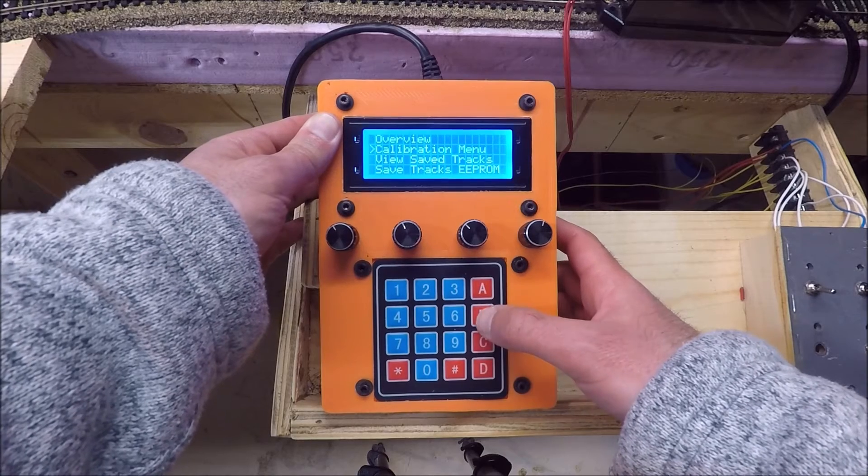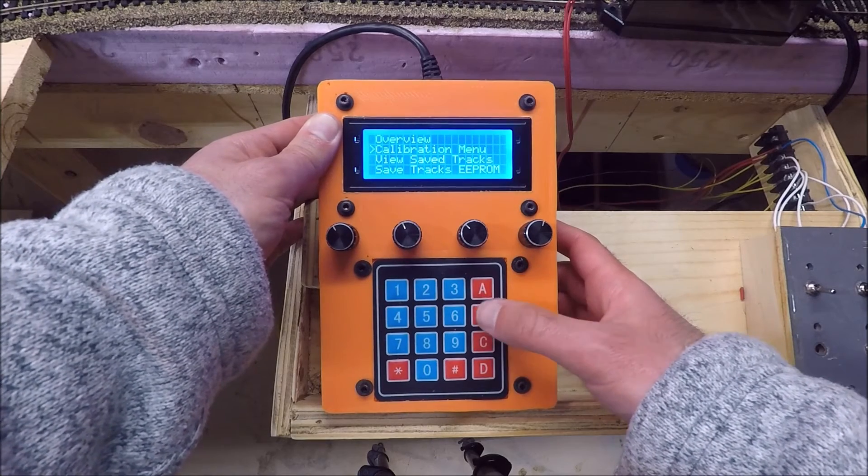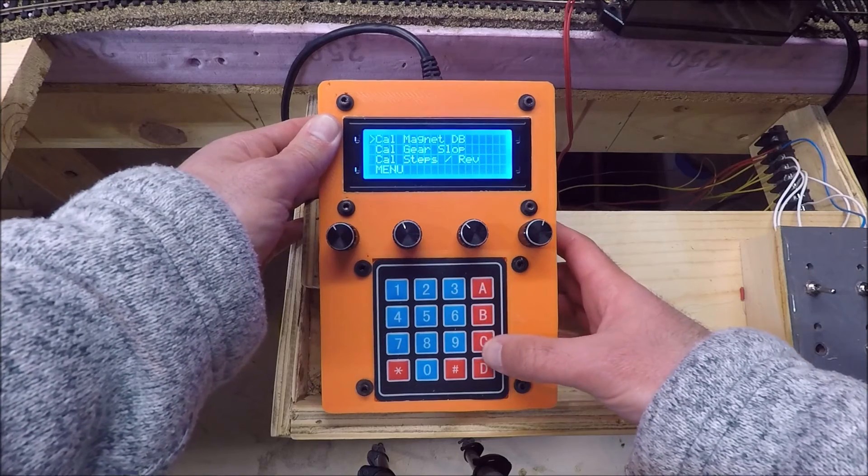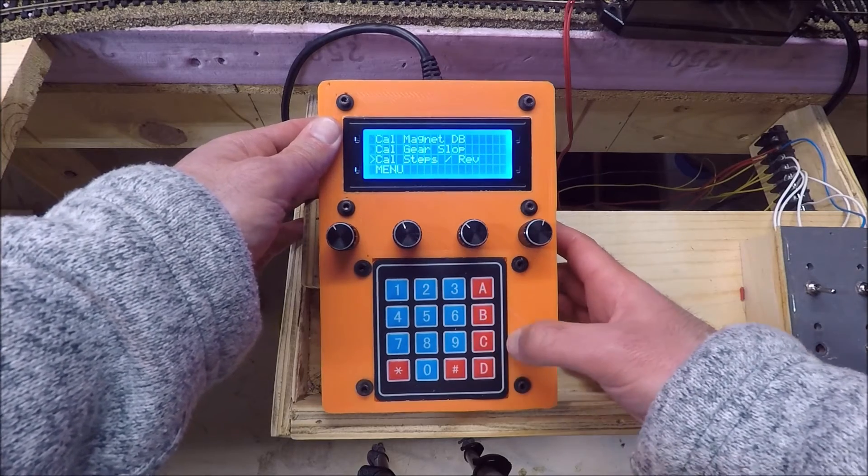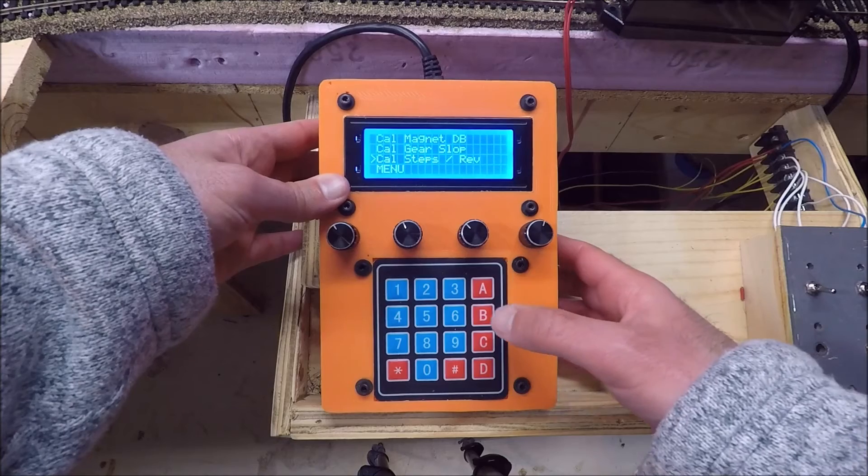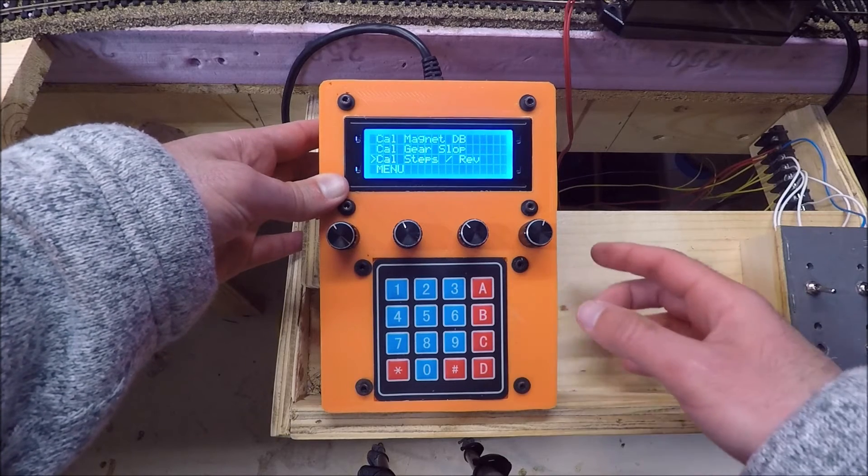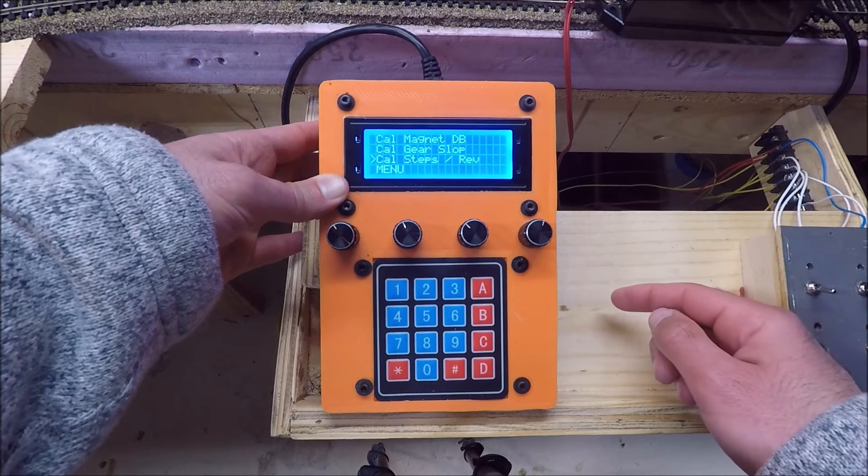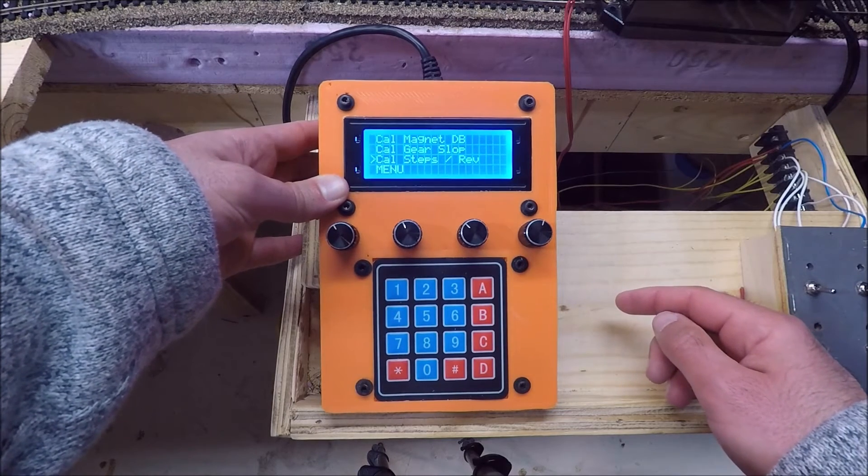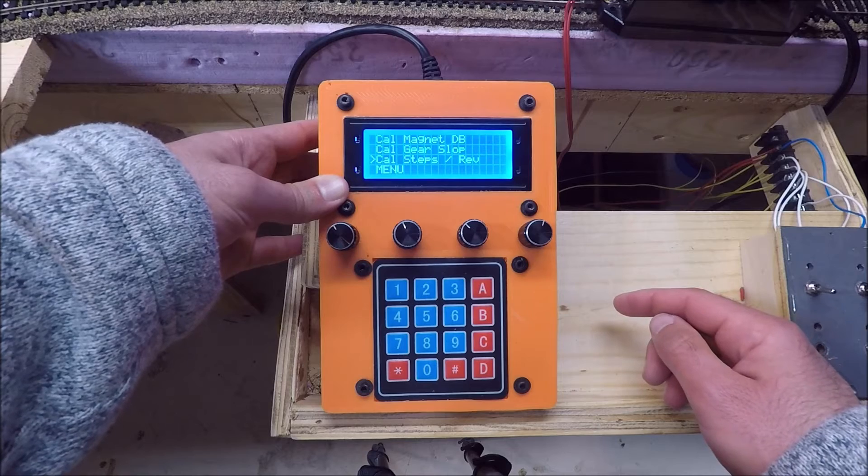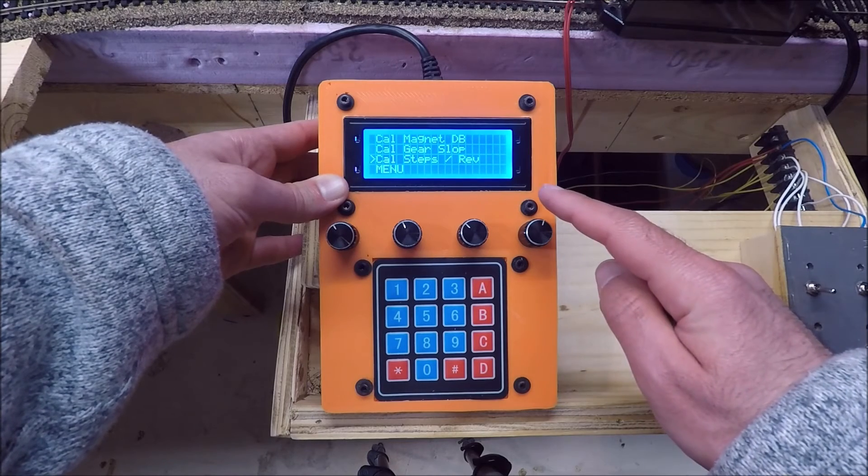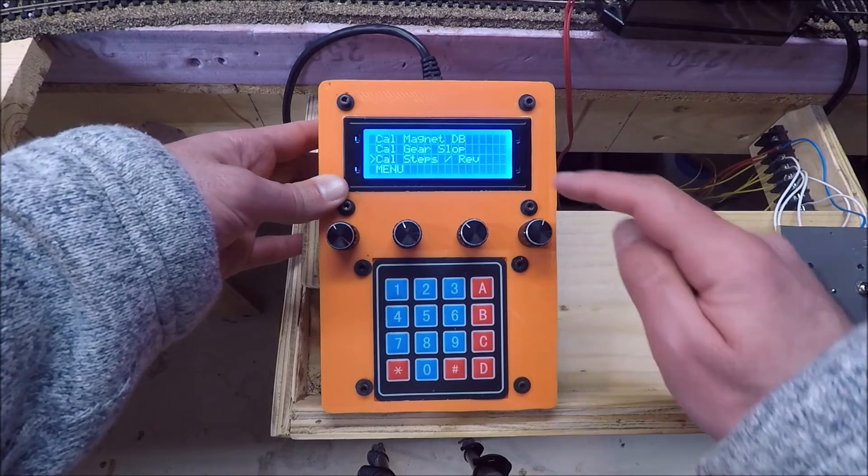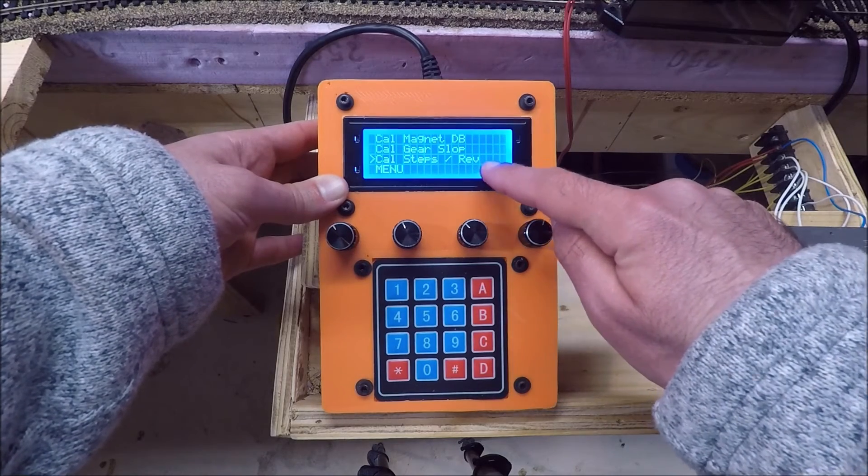The calibrations menu is probably the most powerful thing that I've added to this controller. What this allows you to do is first off this calibrate steps per revolution. You can hit this button. And the turntable will automatically count up how many steps it takes to do one full revolution of your turntable. You don't have to do any math. You don't have to get in the program and enter it. It automatically calculates it and then it saves it into your EEPROM for you. So you don't even have to worry about it. That's probably one of the best things I've added.